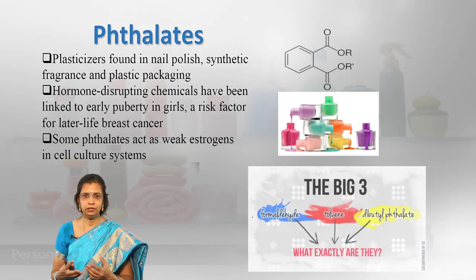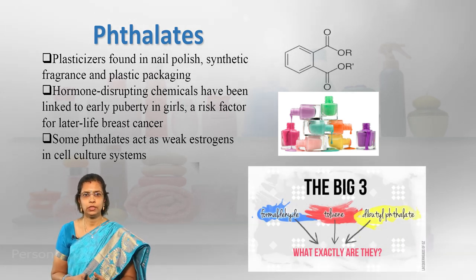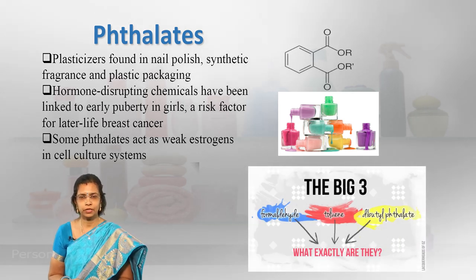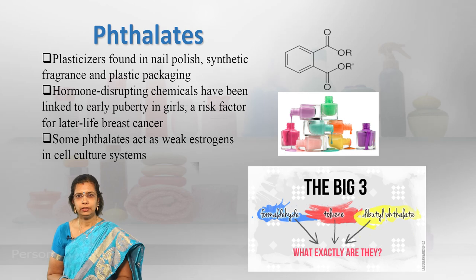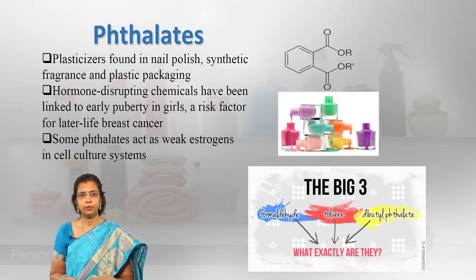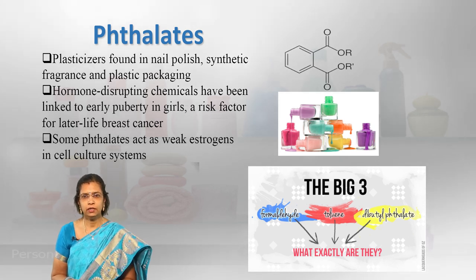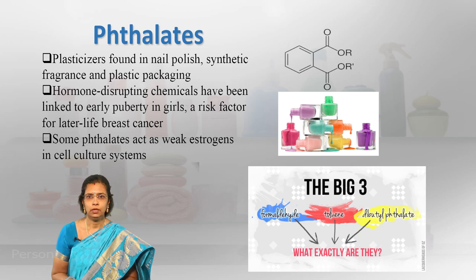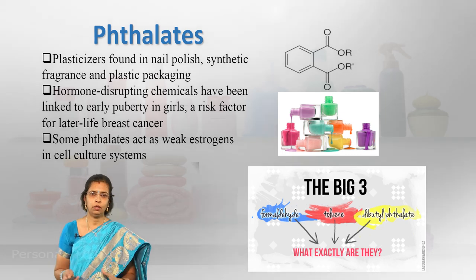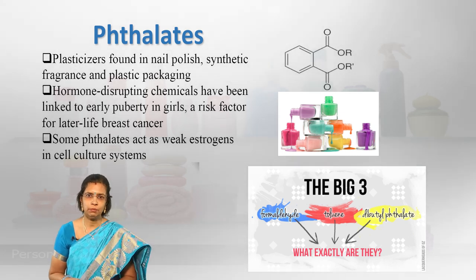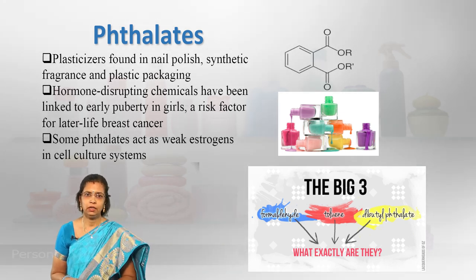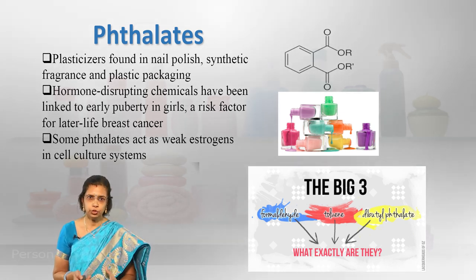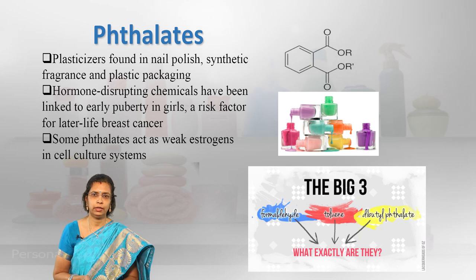The 'big three' toxic chemicals used in nail polishes are formaldehyde, toluene, and dibutyl phthalate. We should be careful in picking nail polish colors that are suitable for our health.